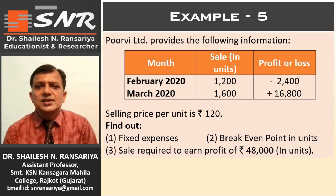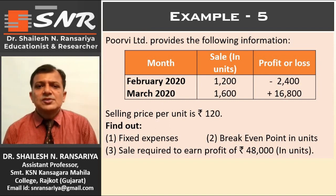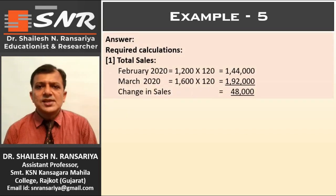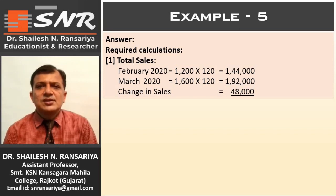First we will make required calculations. Sales is given in units but per unit selling price is given, so we calculate sales for each month. In February: 1200 × 120 = ₹1,44,000. In March: 1600 × 120 = ₹1,92,000. So the change in sales is ₹48,000.